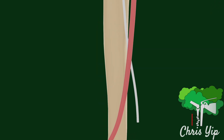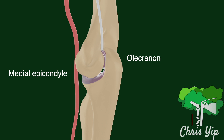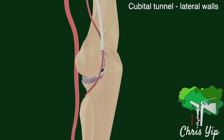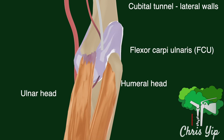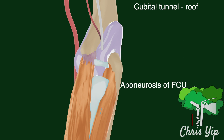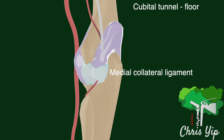The nerve then passes through a groove between the medial epicondyle and the olecranon, where it enters the cubital tunnel with the superior collateral ulnar vessels. The lateral walls of the cubital tunnel are formed by the ulnar and humeral heads of the flexor carpi ulnaris. The roof of the tunnel is formed by the aponeurosis that joins the two heads, as well as a thickened fibrous band called Osborne's ligament. The floor of the tunnel is formed by the medial collateral ligament.